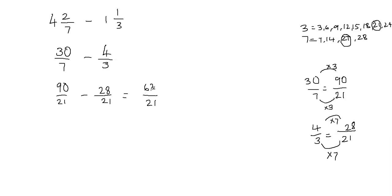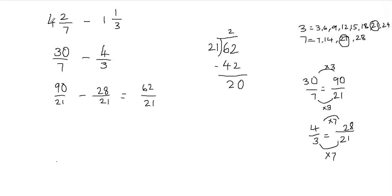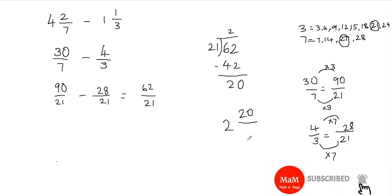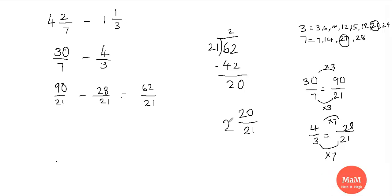This is an improper fraction because my numerator is bigger than the denominator. So I'm going to convert this into a mixed fraction using the long division method. 21 goes into 62 two times — 21 times 2 is 42, and 62 minus 42 is 20, which is my remainder. The quotient becomes my whole number, the remainder goes in the numerator, and the divisor goes in the denominator. So my answer is 2 and 20 over 21.